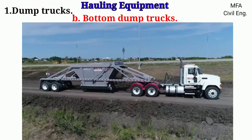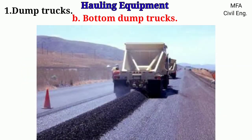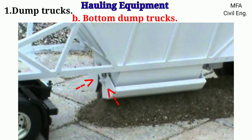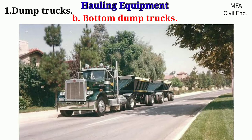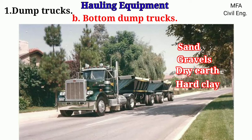Bottom dump trucks are similar to the semi-trailer, in which their front is supported on the rear of the hauling tractors and their rear is resting on their own wheels. The body of the tractors remains in the same position and the discharge of the material takes place through its bottom, after opening of the two longitudinal gates. The gates are hinged to the side of the body. These trucks are suitable for use in hauling free-flow materials like sand, gravels, dry earth, and hard clay.